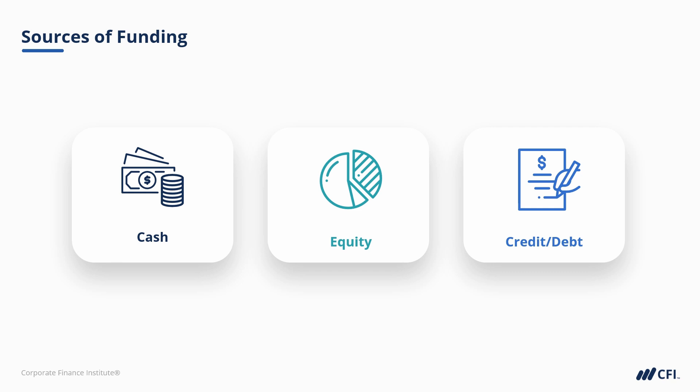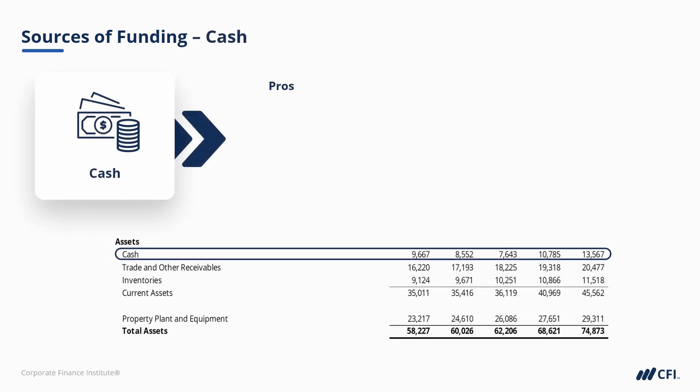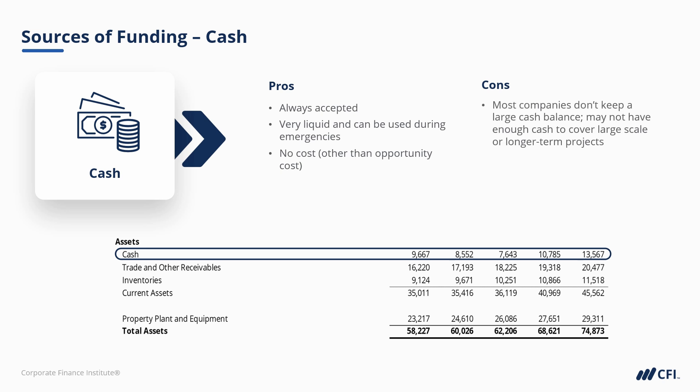Let's take a look at the pros and cons of each, starting with cash. Cash is always accepted as a source of funding for a project or a purchase — that goes without saying. It's very liquid, which means it can be accessed immediately, and there's no cost to getting the cash a company already has, other than the opportunity cost of not being able to invest it in something else. On the flip side, companies generally don't keep very large cash balances that management can access for a big project. It's also a common strategy for management teams to try and preserve the cash they do have in case of emergencies. In business and finance, you'll often hear 'cash is king.' So it's a balance between keeping enough cash for emergencies but not leaving excessive cash that could be used to fund new CAPEX. This is why it's common for businesses to seek an external source of funding for growth initiatives, like equity or debt.